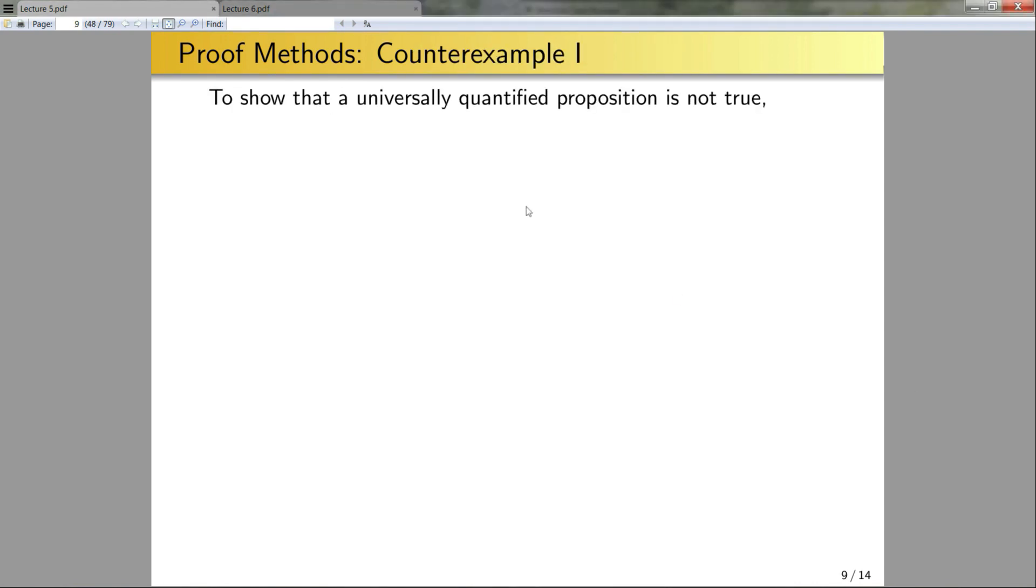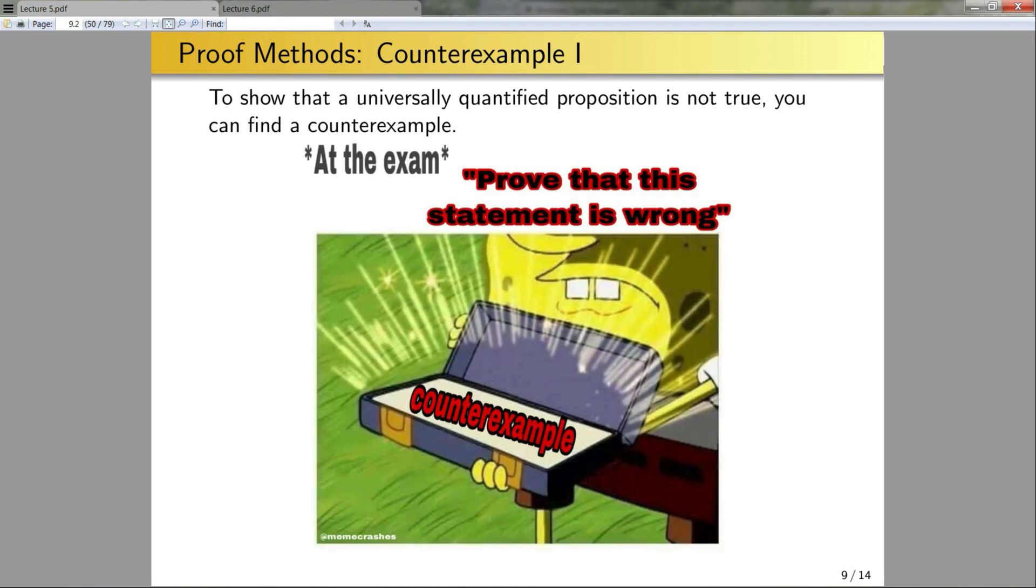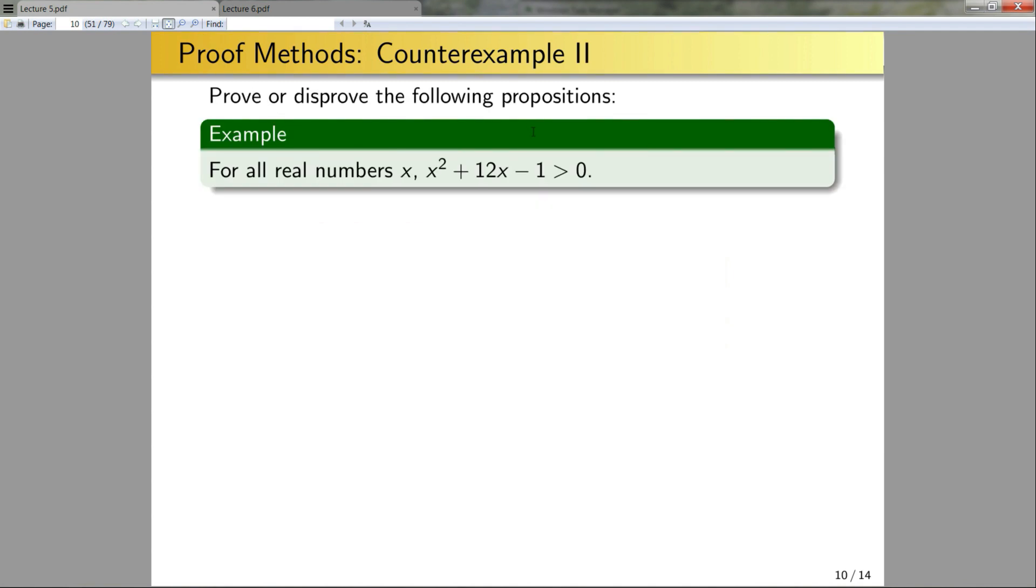Now we have another proof technique, proof by counterexample. So if I gave you a universally quantified proposition and asked you to show that it's not true, one way to do this is simply find a counterexample. So let's look at a few examples of this. Prove or disprove the following propositions. For all real numbers x, x squared plus 12x minus one is greater than zero. Well, if I look at this for a while, or maybe even plot the function, you can notice that it's not always positive. So in particular, when x is equal to zero, this thing is equal to minus one, which is less than zero. Thus the statement is false because I've given a counterexample.